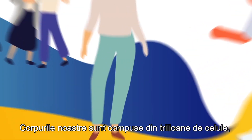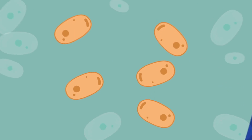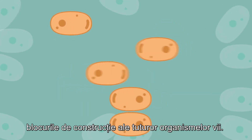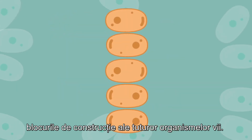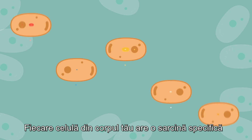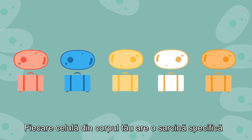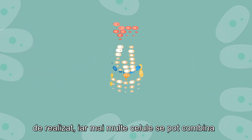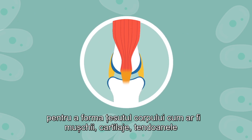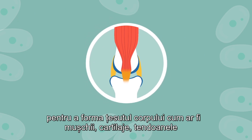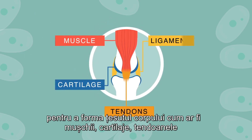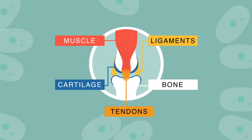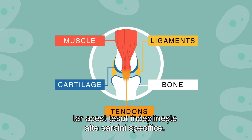Our bodies are composed of trillions of cells, the building blocks of all living things. Each cell in your body has a specific job to do, and multiple cells can combine to form body tissue such as muscle, cartilage, tendons, ligaments, or bone, and this tissue then fulfills other specific tasks.